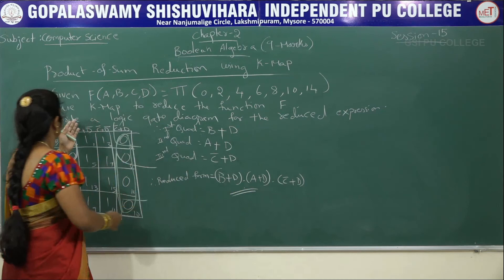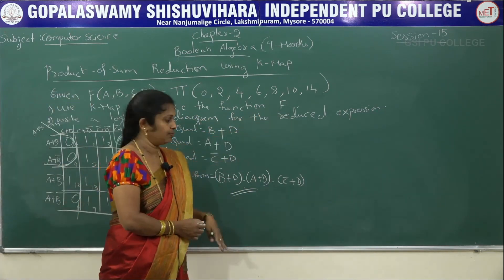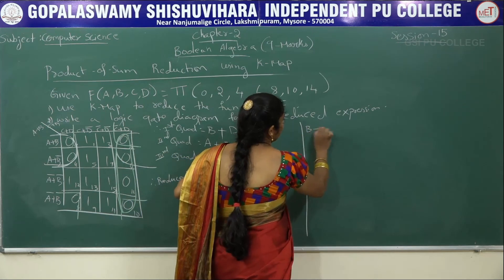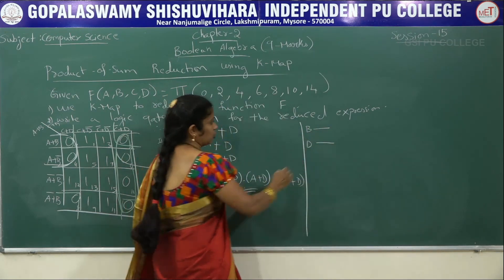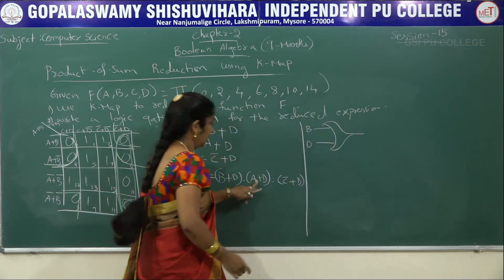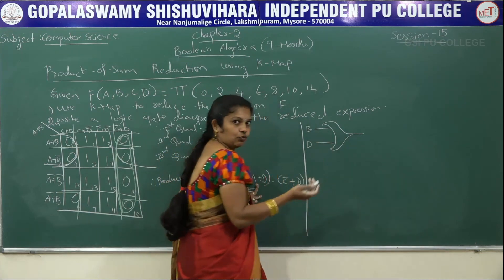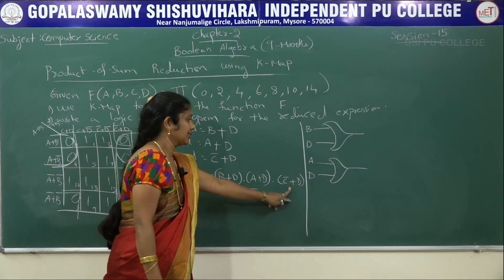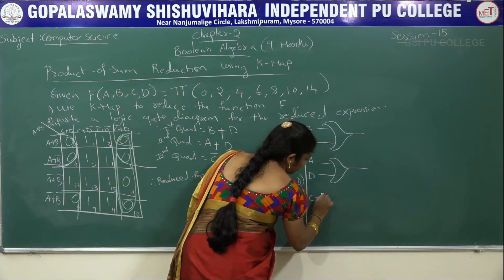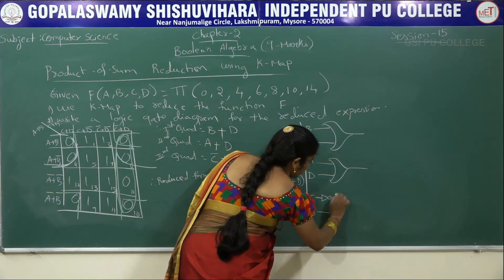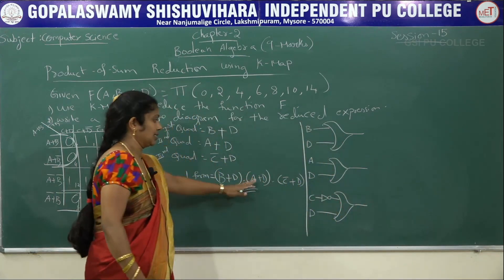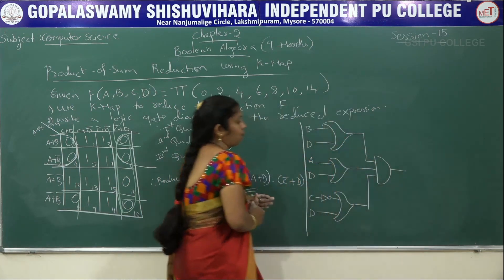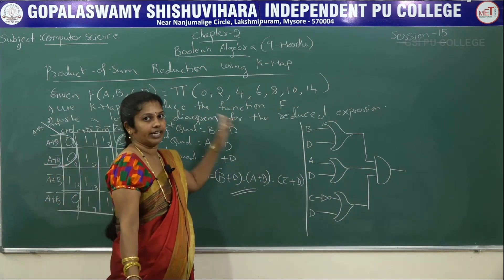For the reduced expression, write the logic gate diagram. For B plus D: input B and D combined with an OR gate. For A plus D: input A and D combined with another OR gate. For C bar plus D: input C through a NOT gate to get C bar, then combine C bar and D with an OR gate. All three OR gate outputs are then connected with AND gates (dot operator), giving the final reduced circuit diagram.